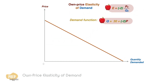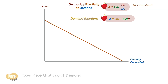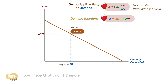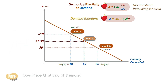By studying the function for elasticity, we can observe that it is not constant — it very much depends on which point of the curve we're examining. For example, at a high price of $10, the quantity demanded will be 10 units and the price elasticity here is minus 2. At a low price of $5, the quantity demanded will be 20 units, and the price elasticity here is minus 0.5. For a downward sloping demand curve, there is a unique point where the elasticity is minus 1. We call this the unitary elasticity point.